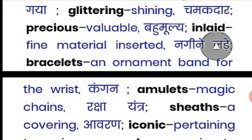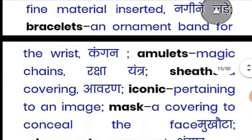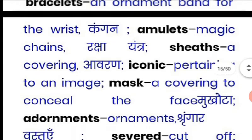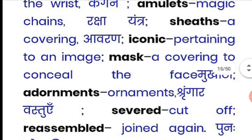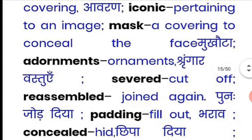'Bracelets' are ornaments tied around the wrist. 'Amulets' are magic chains or talismans. 'Sheets' means a covering. 'Iconic' means pertaining to an image — representing something. 'A mask' is a covering used to conceal the face. 'Adornments' are ornaments or decorations.